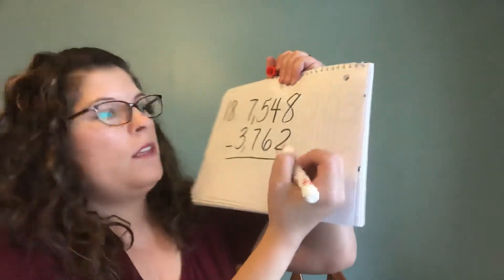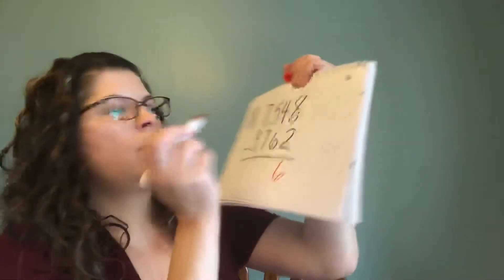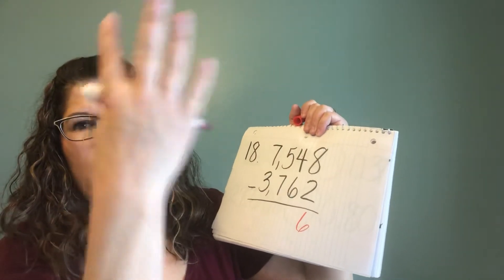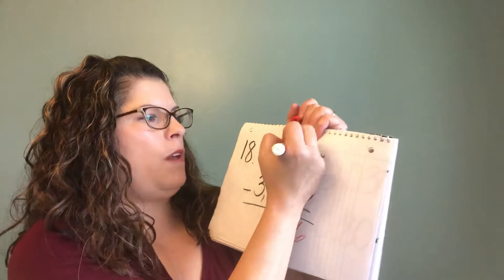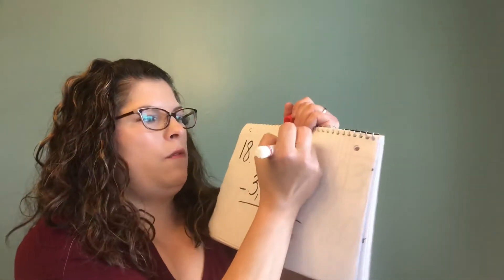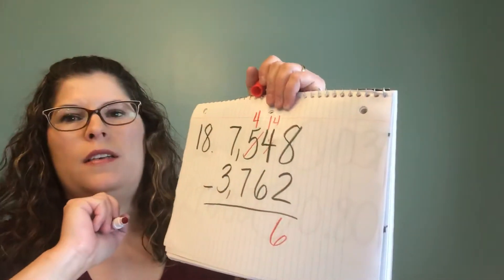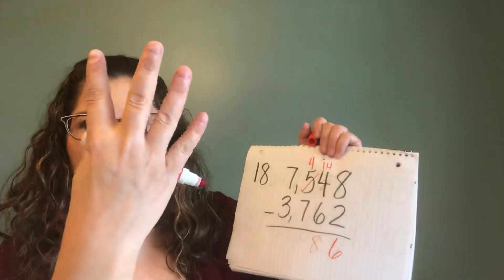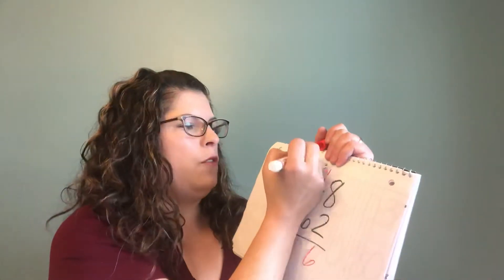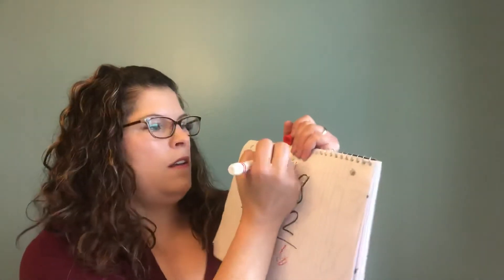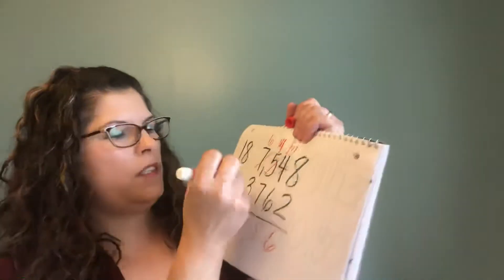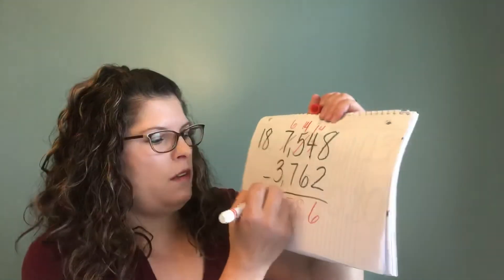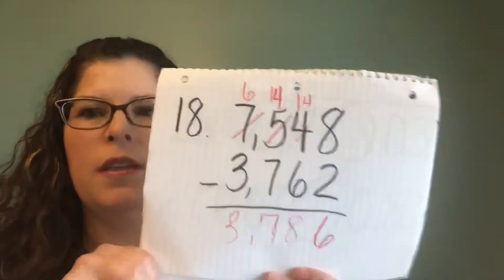Always start in our ones. 8 minus 2 equals 6. Then 4 minus 6 — can't do it, so I'm going to have to ungroup that 5, make it a 4, and make this a 14. 14 minus 6 equals 8. Then 4 minus 7 — can't do it, need to ungroup that 7, make it a 6, and make this a 14. 14 minus 7 equals 7. Then 6 minus 3 equals 3. So that's just a quick ungrouping example.